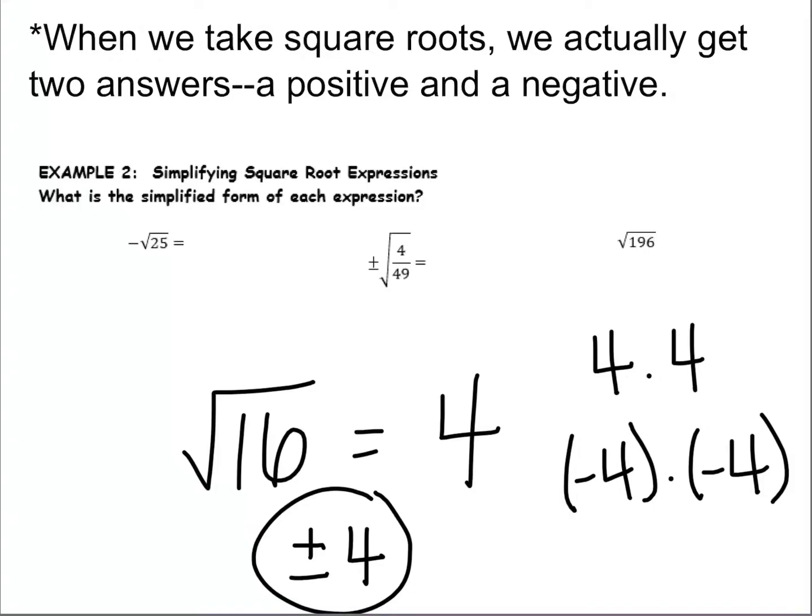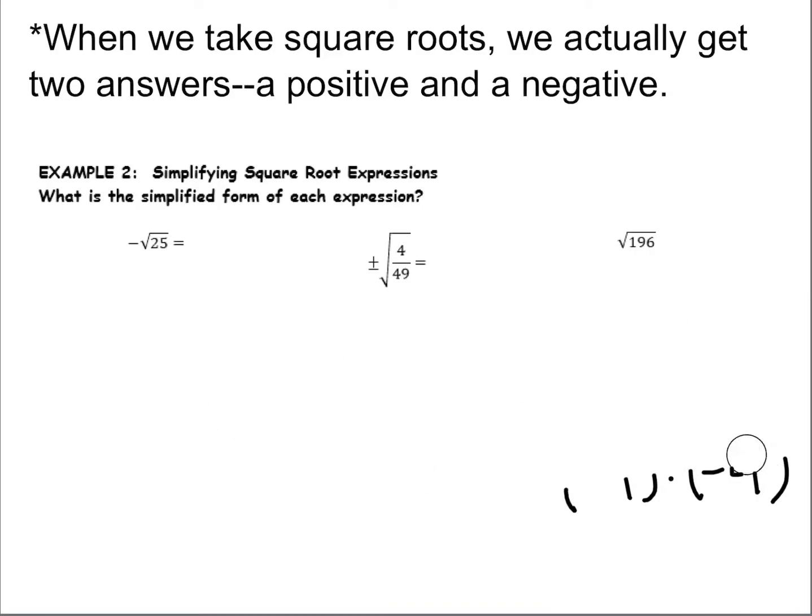The only time that a negative would not be possible with a square root is if it was underneath the radical sign, which none of these are. So we're going to go through and figure these out. We need the negative square root of 25. They say it's going to be negative. That's what having that on the outside means. And the square root of 25 is 5, so our final answer would just be negative 5 in this case.